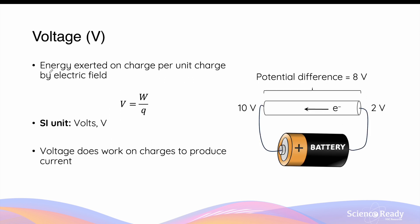Voltage refers to the energy exerted on a charge by the electric field divided by the unit charge. So this is the amount of work done by the electric field to cause movement of charges, which gives rise to current. Voltage equals the amount of work done, which is the energy transferred by the electric field, divided by the charge the work is done upon.